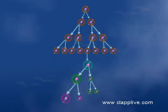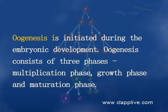Oogenesis. The process of formation of a mature female gamete, the ovum, is called oogenesis. This process is initiated during the embryonic development stage.